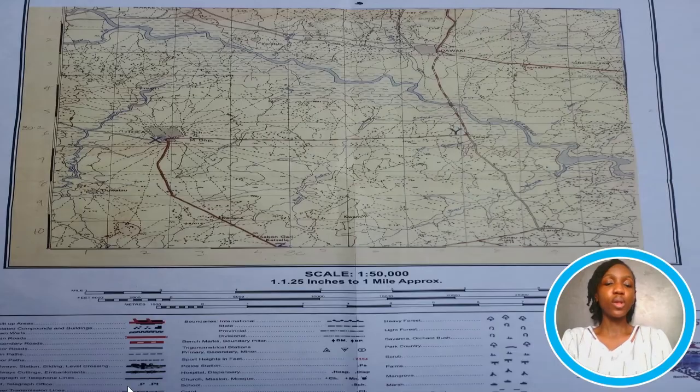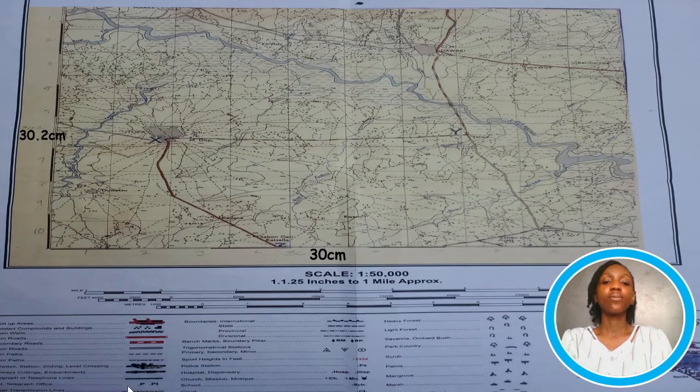Now, firstly, we need to measure the length and width of the map. On measuring, we have 30.2 centimeters by 30 centimeters. Now, the next thing to do is to identify whether it's going to be reduction or enlargements. I'm sure some people can already see what it's going to be.